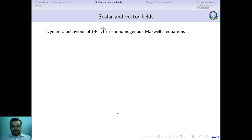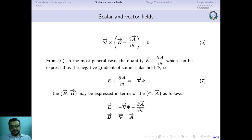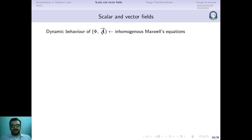We have now obtained the notion of the scalar potential φ and the vector potential A from the homogeneous Maxwell's equations. But how do these two potentials behave with time — that is, what is their dynamic behavior? The dynamic behavior of φ and A can be obtained from the inhomogeneous Maxwell's equations. Out of four Maxwell's equations, two homogeneous equations gave us the notion of these potentials, and the other two inhomogeneous equations will tell us about the dynamic behavior of φ and A.